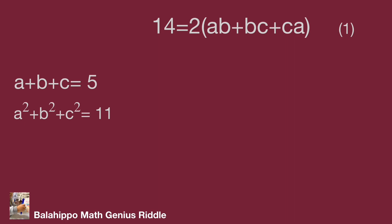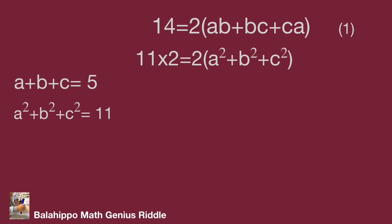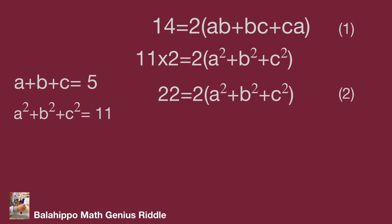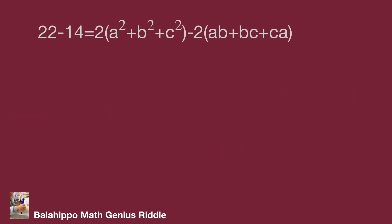Next, multiply both sides of the equation a squared plus b squared plus c squared equals 11 by 2. We have another new equation: 22 equals 2 times bracket a squared plus b squared plus c squared. We name it equation 2. Subtract equation 1 from equation 2: it becomes 22 minus 14 equals 2 times quantity a squared plus b squared plus c squared minus 2 times bracket ab plus bc plus ca.